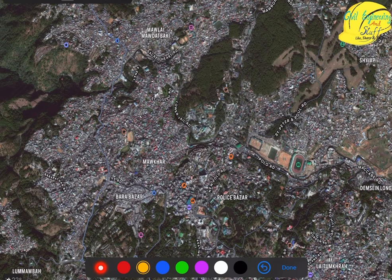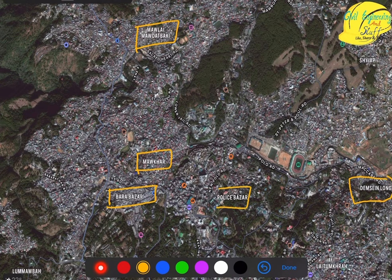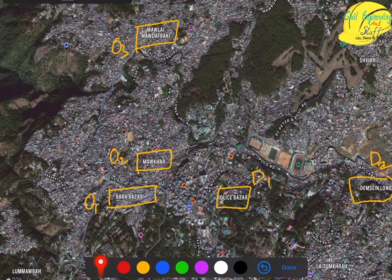Through origin and destination studies we try to find out the pattern, and the data help us evaluate the present road condition and the areas we need to work upon. For example, consider a certain area selected for road network development. We have certain sections considered as origin points — O1, O2, O3 — and D1 and D2 as our destination points.